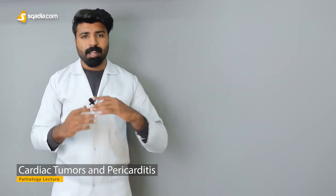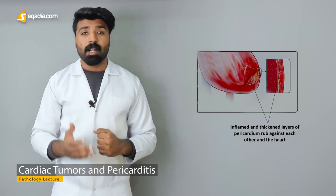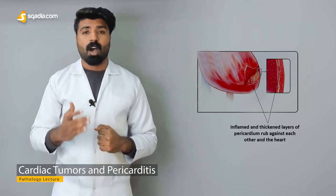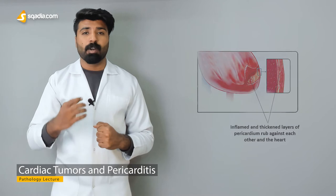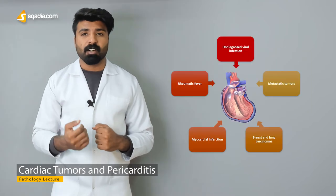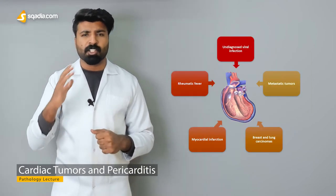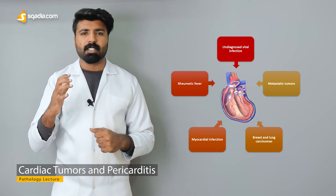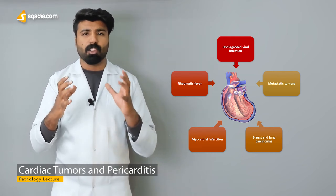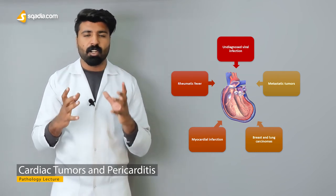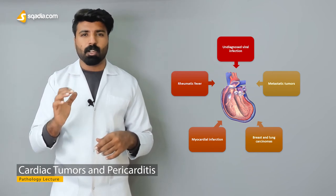Next, we're going to talk about pericarditis — what it is, how it is formed or originated, and what its types are. We'll first discuss constrictive pericarditis, then adherent pericarditis, and look closely at how they are differentiated.